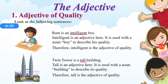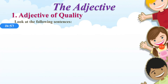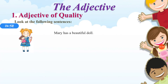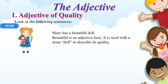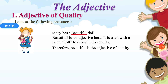The building is tall. 'Tall' describes more about the building and is an adjective of quality. Mary has a beautiful doll. Here, 'beautiful' is an adjective. It is used with the noun 'doll' to describe its quality. Therefore, 'beautiful' is an adjective of quality.